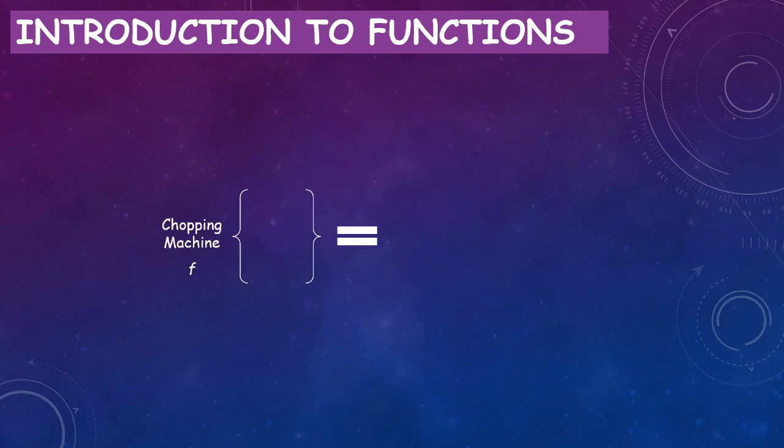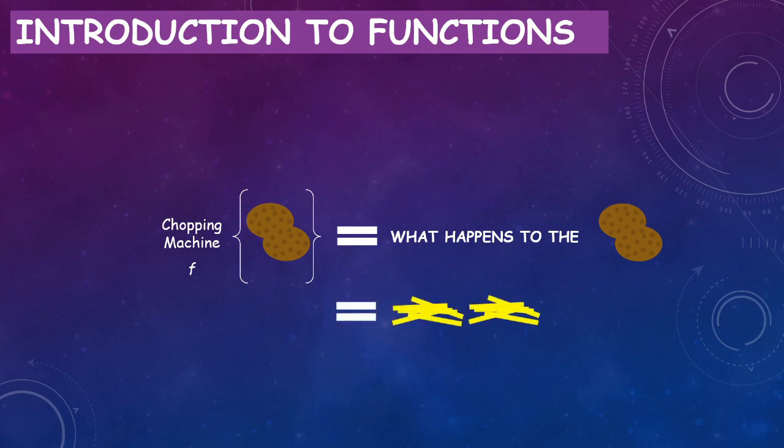How do I put that analogy into an equation? Well, my chopping machine is my function f and my potatoes are my input. And the result is what happens to the potato, which is chopped potatoes, of course.